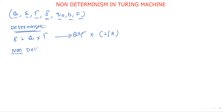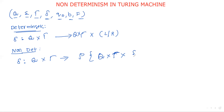Coming to non-deterministic Turing machines, the only variation is in delta. Delta is: Q cross sigma cross lambda maps to the power set of Q cross sigma cross {Left, Right}. This is called the power set. That means from a single state with a single tape symbol, we can move to not only a single state but any number of states. That is the main difference between deterministic and non-deterministic Turing machines.